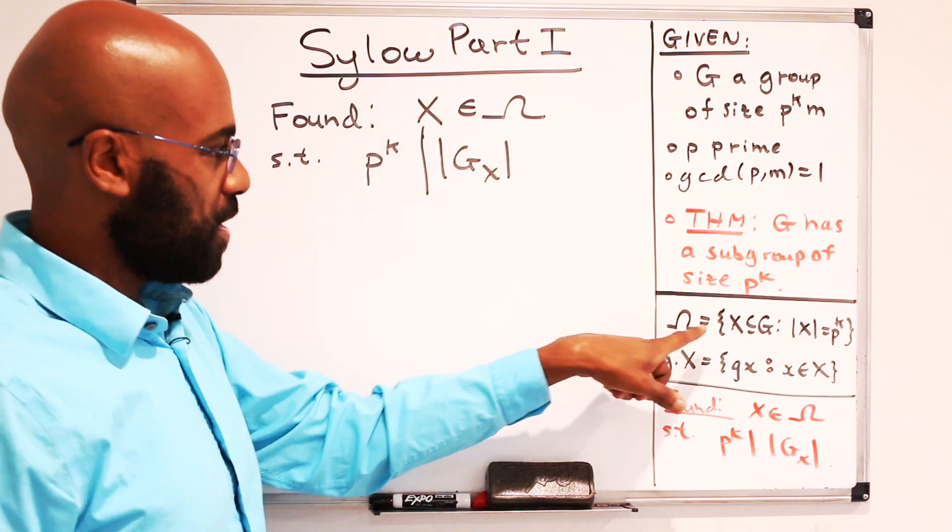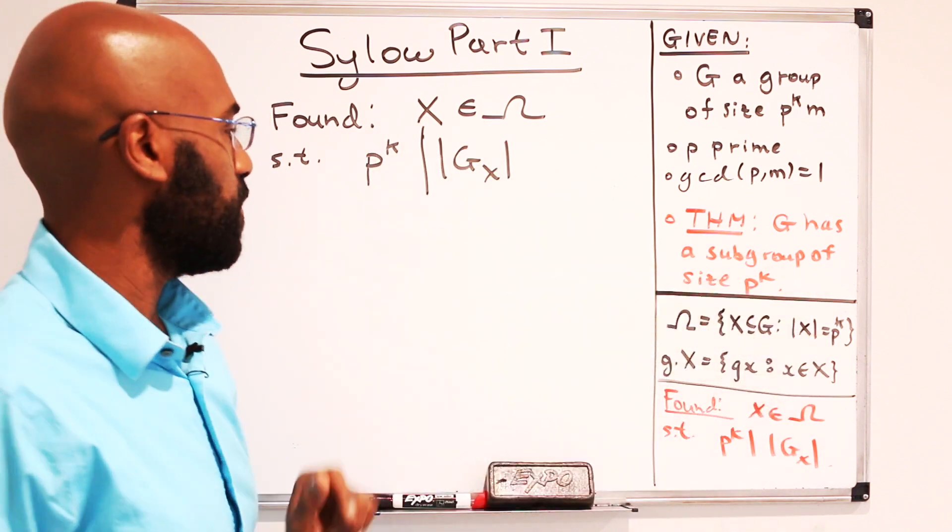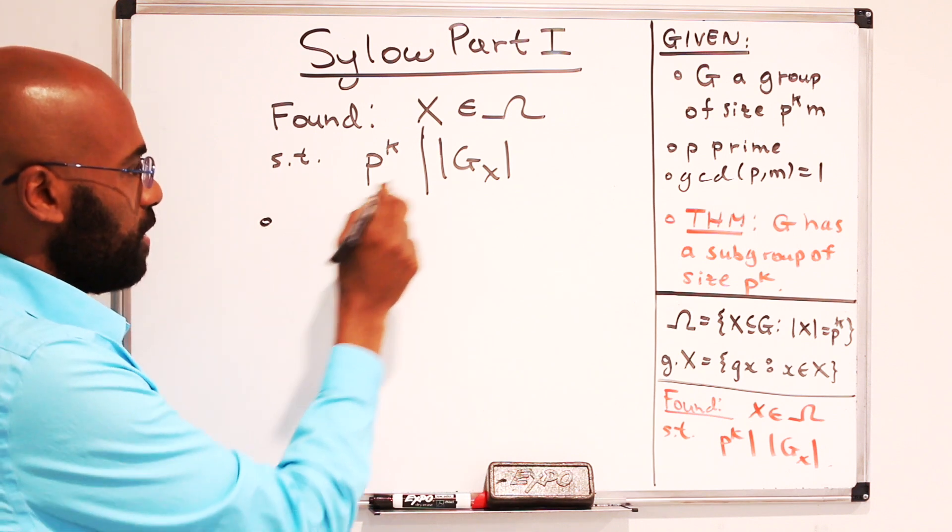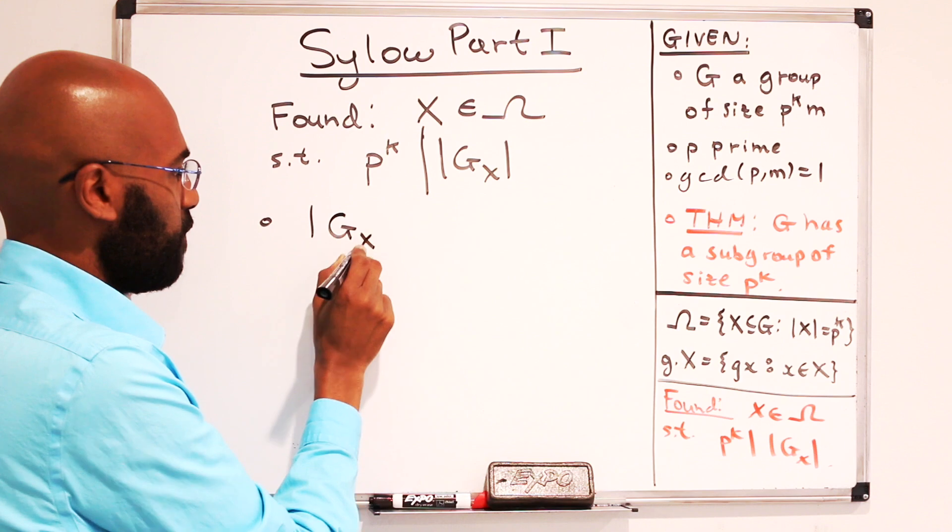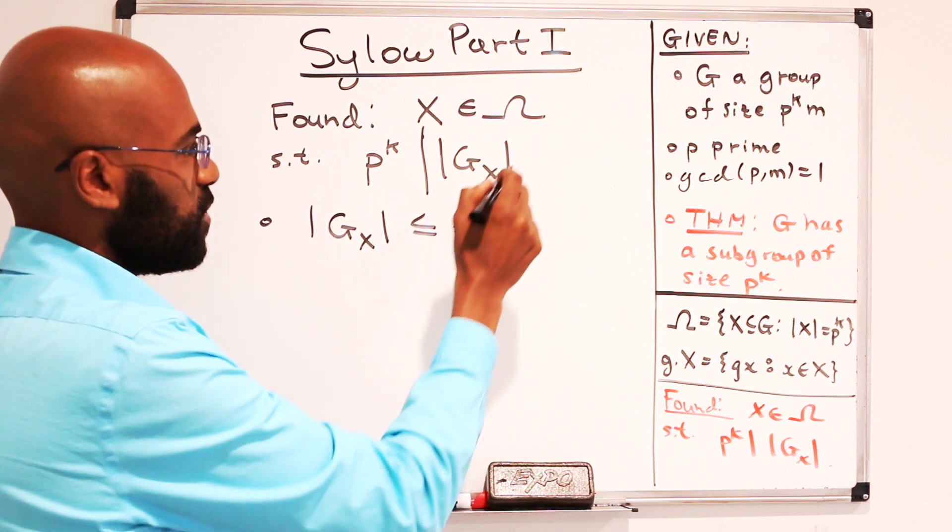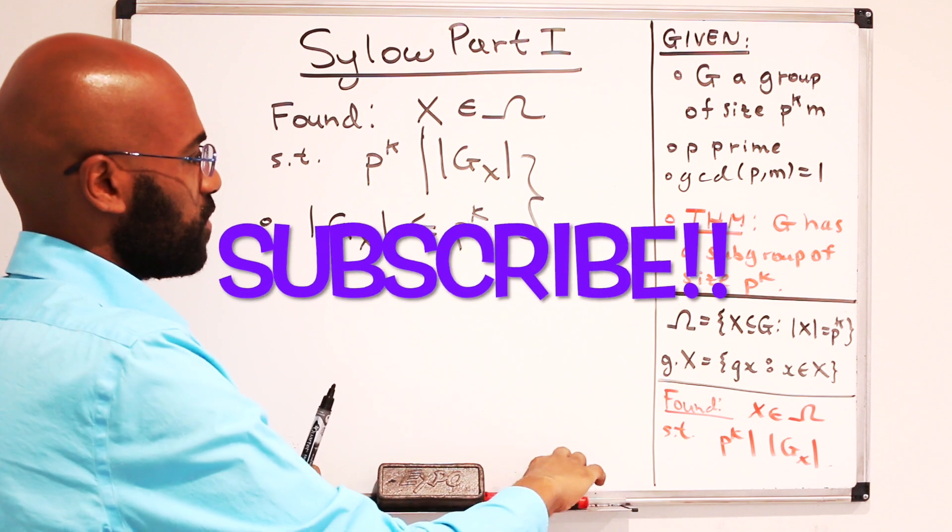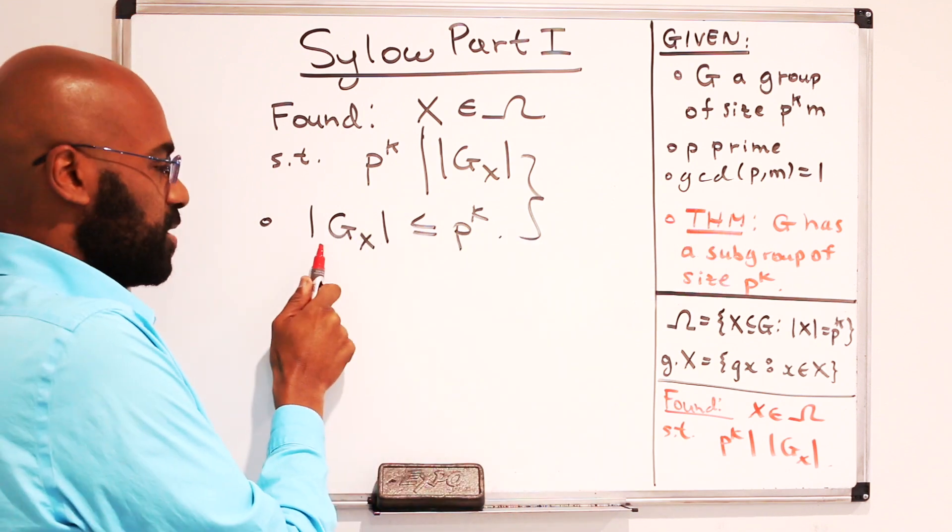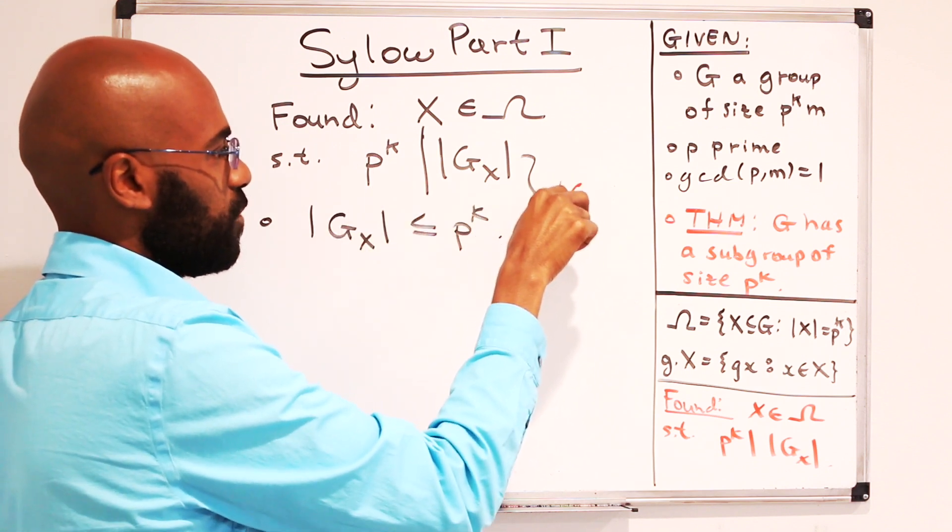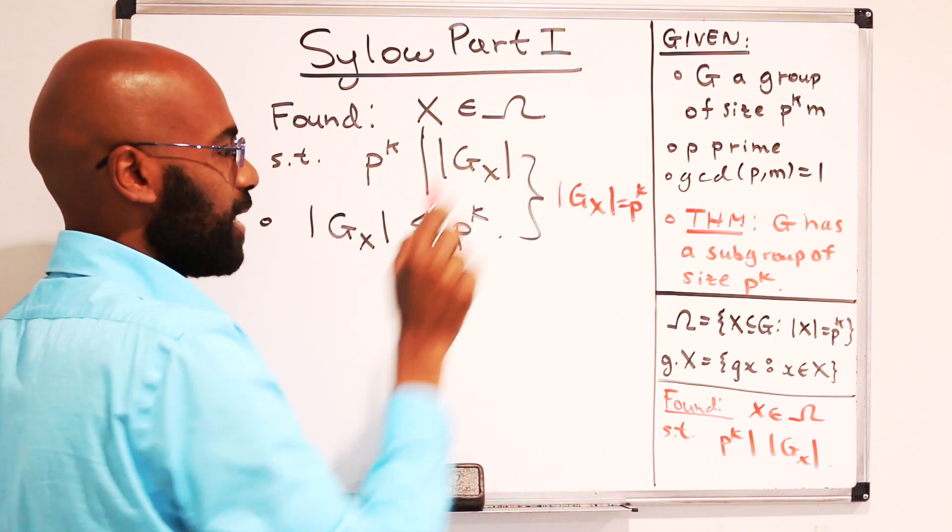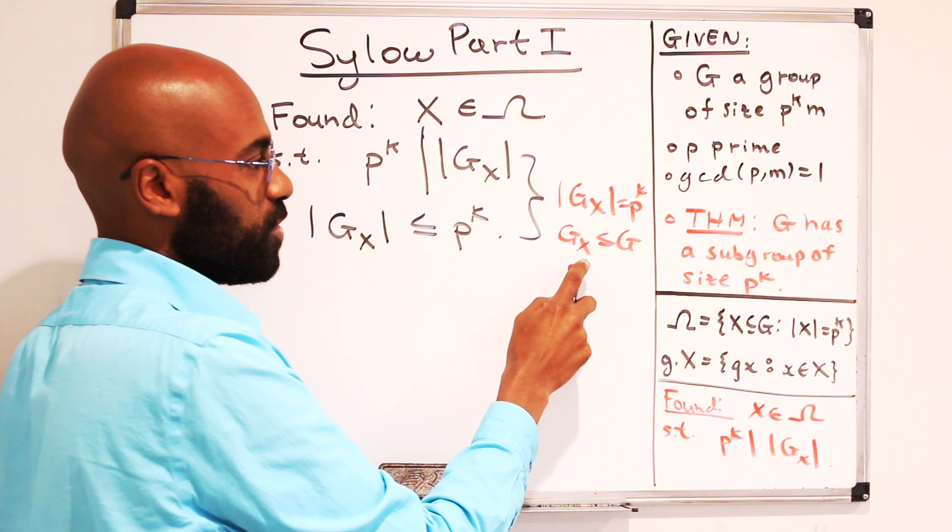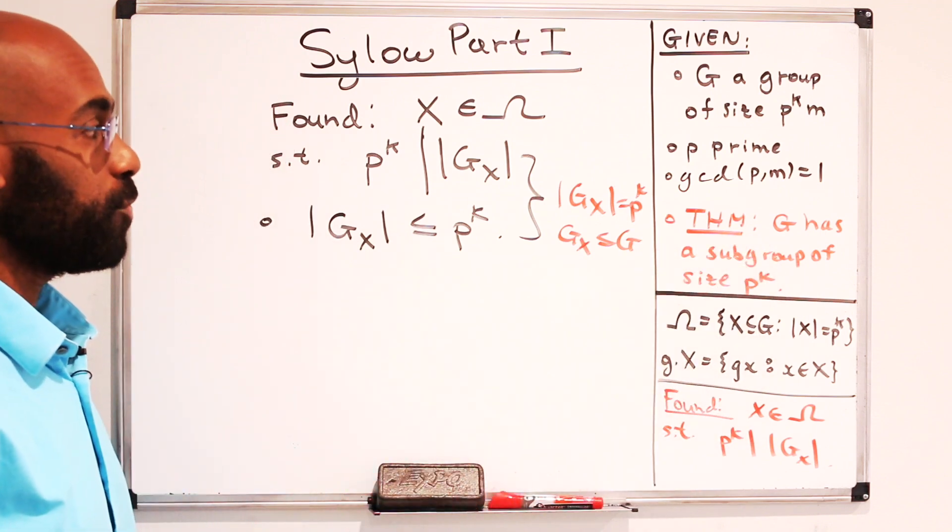So we found an element of this set, so it has size p to the k, so that its stabilizer under the action has p to the k as a factor. What we're going to prove is actually that the size of the stabilizer has to be less than or equal to p to the k for a completely other reason. And putting these two together, the conclusion becomes apparent because we have that the stabilizer has size less than or equal to p to the k, but p to the k divides its size, so these two together would tell you that this stabilizer size is exactly p to the k. And since the stabilizer itself is a subgroup of the group G, this implies the stabilizer is a subgroup of size p to the k, and so it's an example of the type of group that we're looking for.